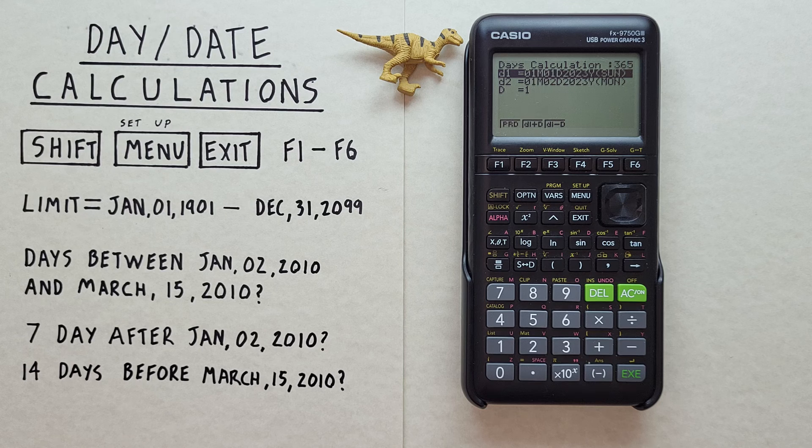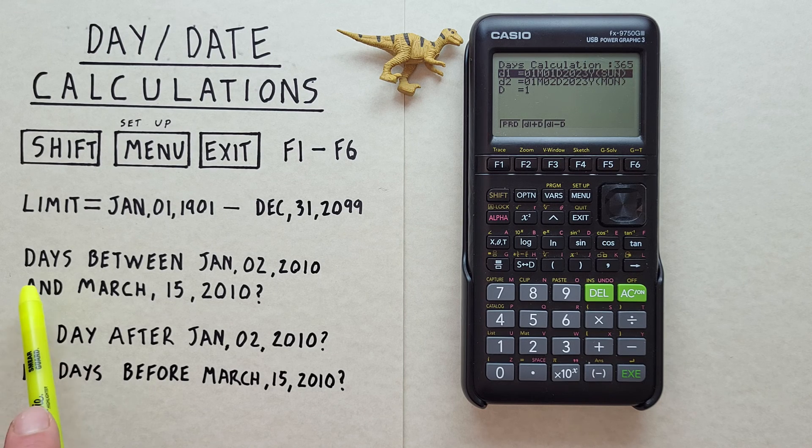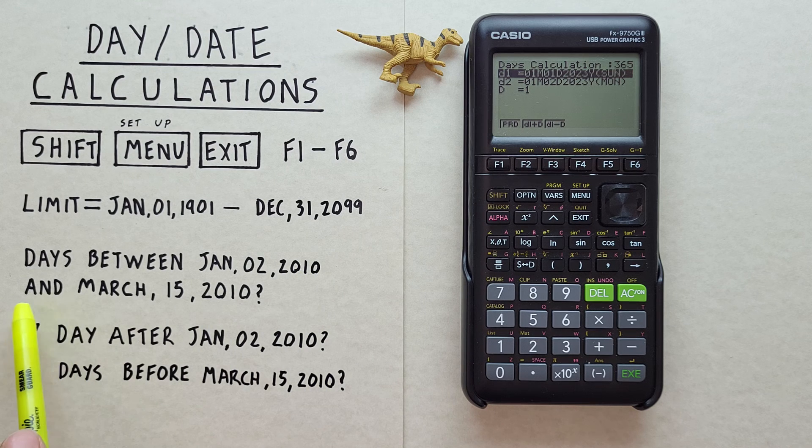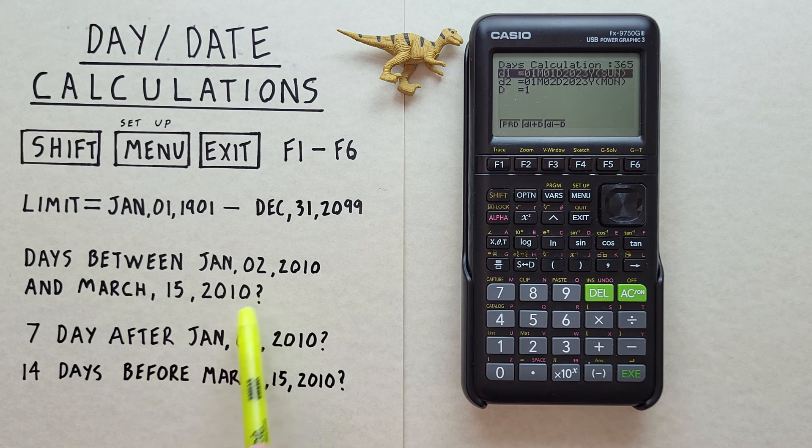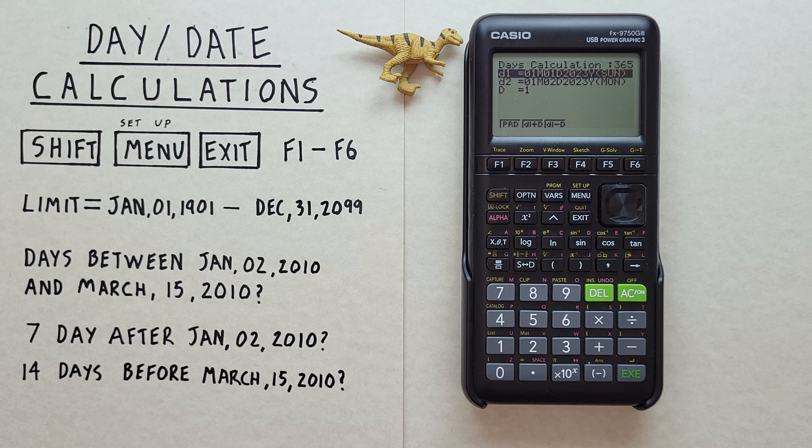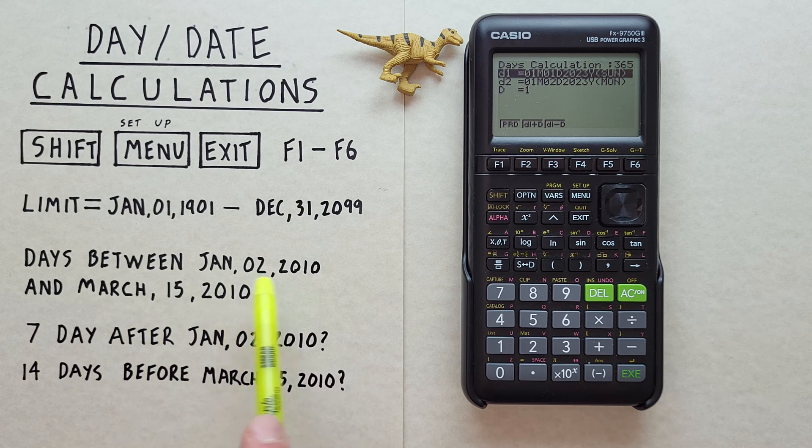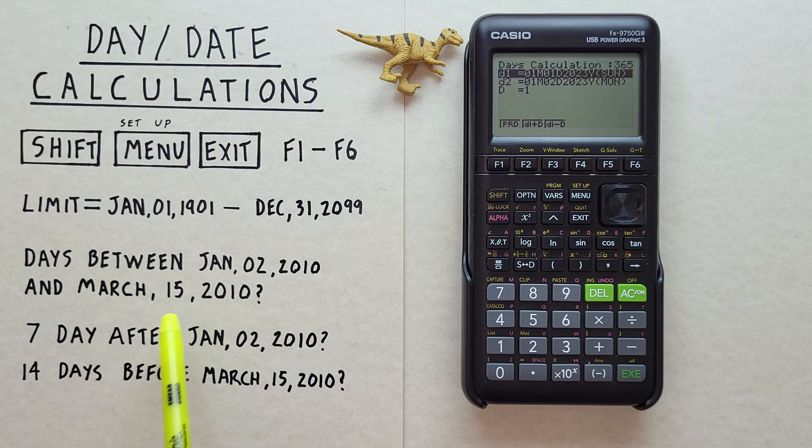Alright, let's try an example. Let's say we're given a project on January 2nd 2010 that was due on March 15 2010. How many days would we have to complete that project? Or how many days between January 2nd and March 15 2010?